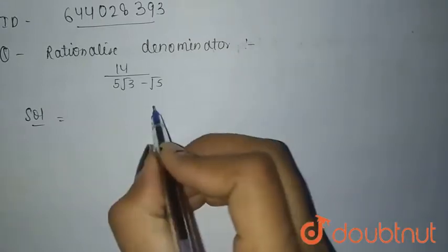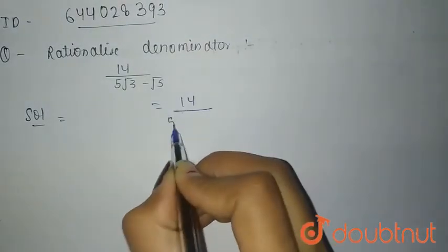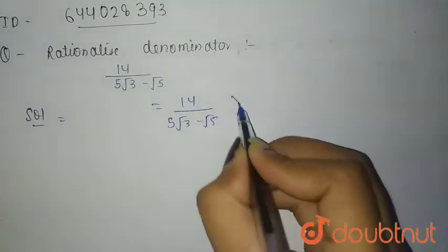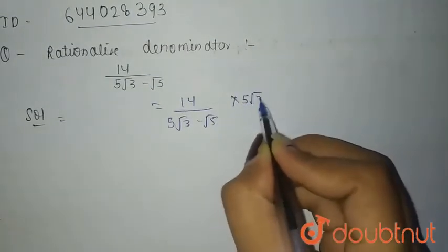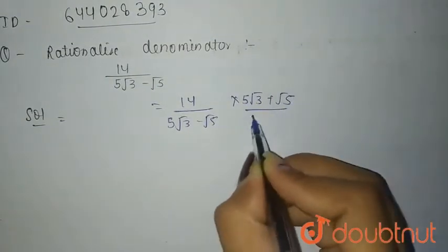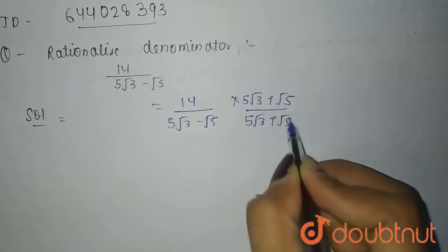Rationalizing the denominator, that gives you 14 by 5 root 3 minus root 5 into 5 root 3 plus root 5 upon 5 root 3 plus root 5.